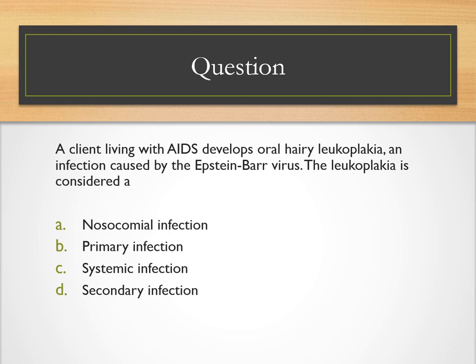Here's a question: A client living with AIDS develops oral hairy leukoplakia, an infection caused by the Epstein-Barr virus. What type of infection is this? The correct answer is D — a secondary infection. The patient's primary infection is HIV, which is a virus. Because of the HIV, the patient is immunocompromised and more susceptible to developing a secondary infection.